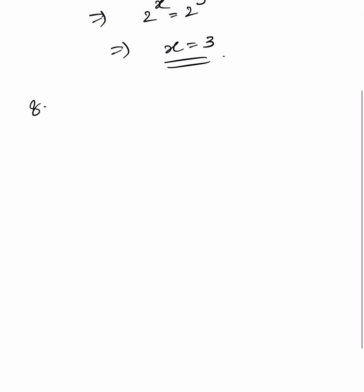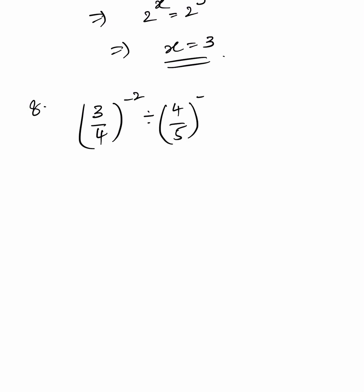Eighth problem. Simplify: 3 by 4 whole to the power of minus 2, divided by 4 by 5 whole to the power of minus 3, into 3 by 5 whole to the power of minus 2.